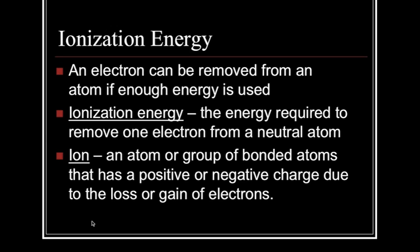The next trend is ionization energy, which is the energy required to remove one electron from a neutral atom. Electrons can be removed from an atom if we use enough energy. We call it ionization energy because as an atom loses or gains an electron, it has a positive or negative charge and becomes an ion. An ion is an atom or a group of bonded atoms that have a positive or negative charge due to the loss or gain of an electron.